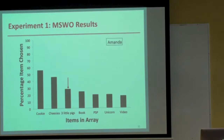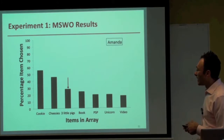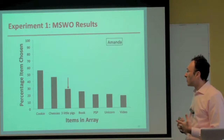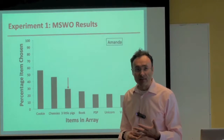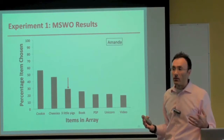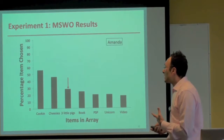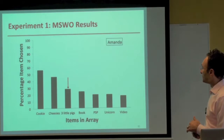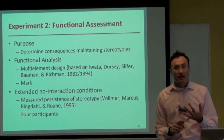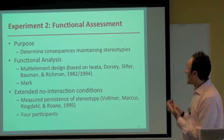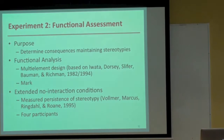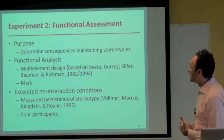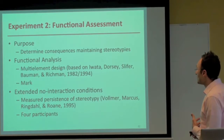The second experiment was a functional assessment to determine the consequences maintaining each participant's stereotypy. Mark participated in a multi-element design; the other four students participated in extended no-interaction series. For Mark, the y-axis shows the percentage of time engaged in stereotypy, with three data paths: the square representing the control or play condition, the triangle the demand or work condition, and the circle the alone condition. The alone condition evidenced the highest instances of stereotypy, suggesting an automatic reinforcer following Hagopian and colleagues' 1997 decision rubrics.